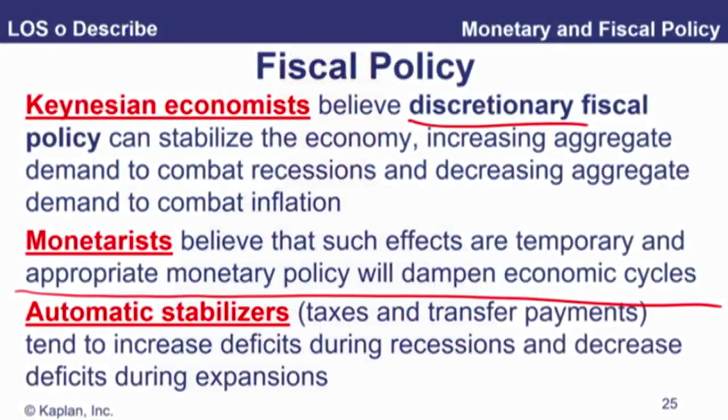Focus as well at the bottom of this slide on automatic stabilizers. Compare and contrast discretionary and automatic. Automatic stabilizers — taxes and transfer payments — so tax revenues for the government and government spending in the form of transfer payments: food stamps, unemployment benefits, things like that. Let's go back to thinking in terms of contractionary and expansionary. Let's imagine we are trying to be expansionary, trying to get out of a recession. What Keynesian economists say is let's be expansionary — government spending up, tax revenue down.